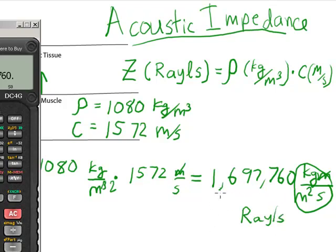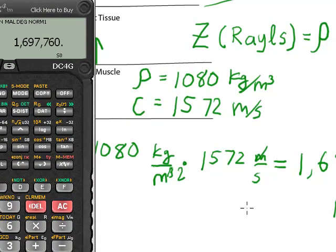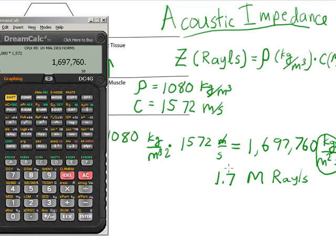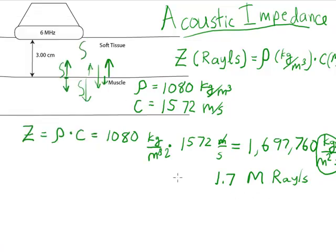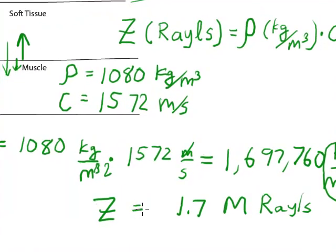And then another thing we'll do is we'll use the metric prefix on this. So if we move the decimal place over one, two, three, four, five, six places, this comes out to be approximately 1.7 mega rayls. So capital M is the metric prefix, meaning one million. And so the impedance of muscle tissue is approximately 1.7 mega rayls.